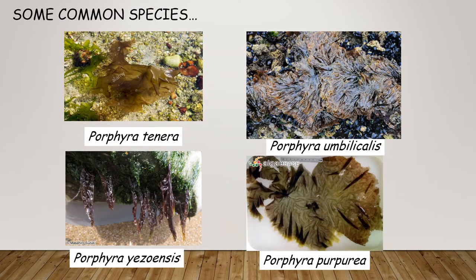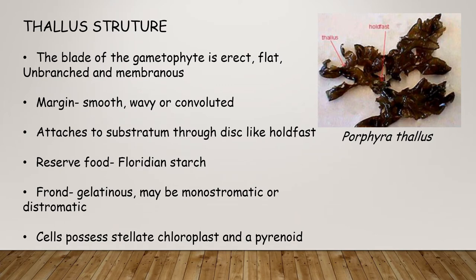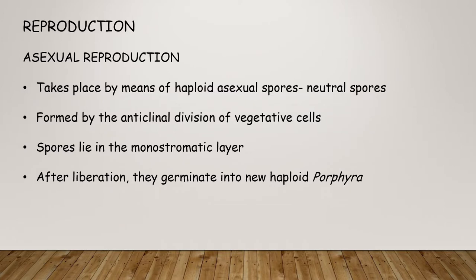Some common species of Porphyra are Porphyra tenera, Porphyra umbilicalis, Porphyra yezoensis, and Porphyra purpureum. The blade of the gametophyte is erect, flat, unbranched, and membranous; margin smooth, wavy, and convoluted, attached to the substratum through a disc-like holdfast. Reserve food is floridean starch. The thallus is gelatinous and may be monostromatic or distromatic. Cells possess a stellate chloroplast and a pyrenoid.